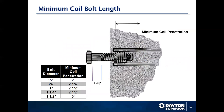For coil bolt length, make sure you have enough length to go through your formwork, account for the setback from the safe surface of the concrete, and include the minimum coil penetration required from the edge of the coil insert to where you bottom out your coil bolt. Remember: you must run through a coil a minimum of one diameter in coil thread — so for a half inch with six threads per inch, run at least three threads past the end of the coil.